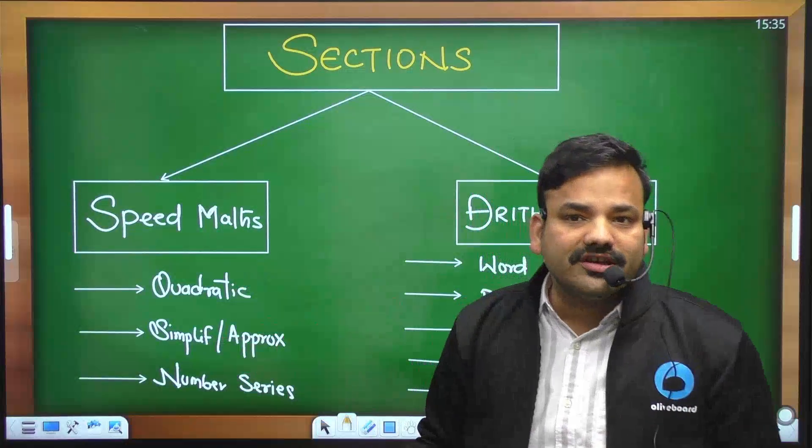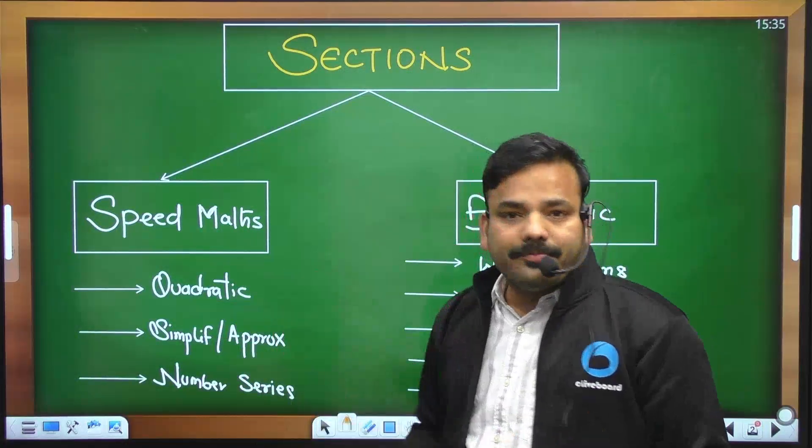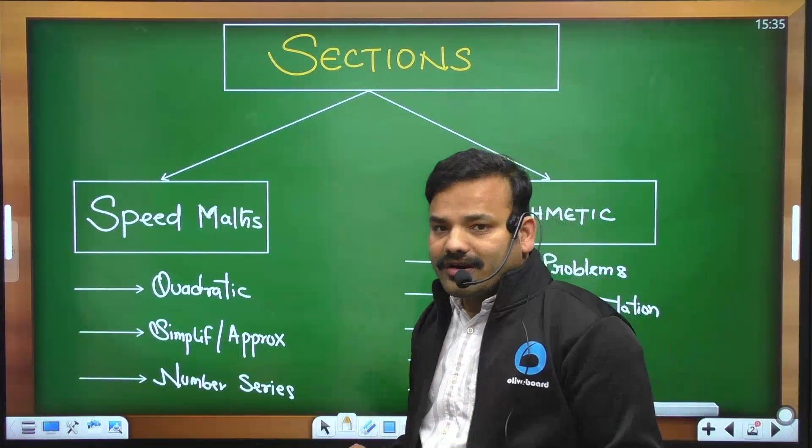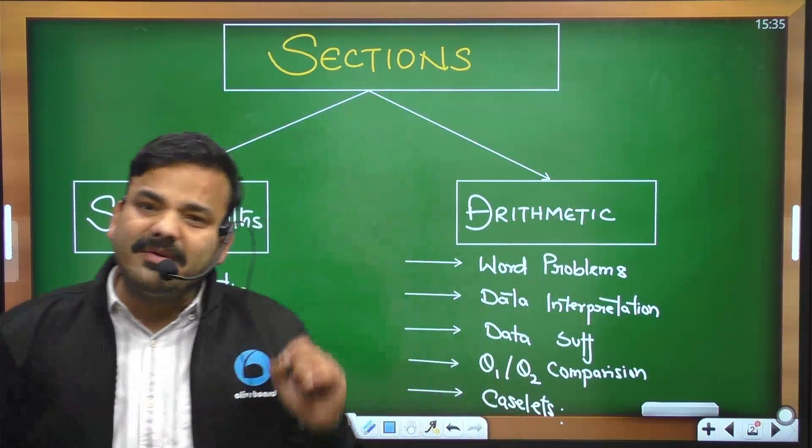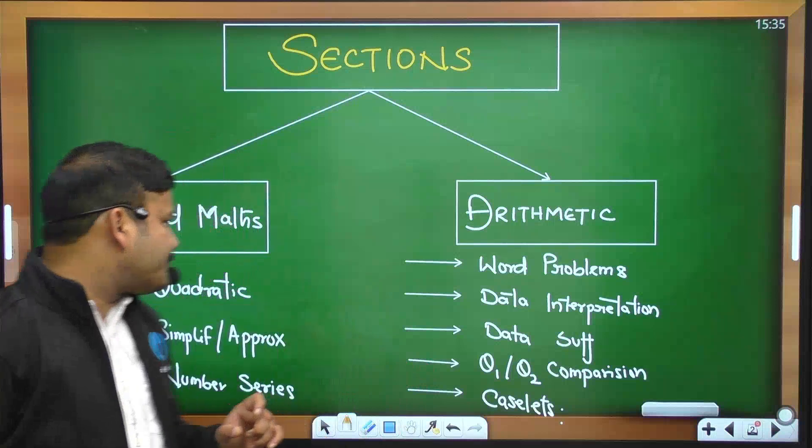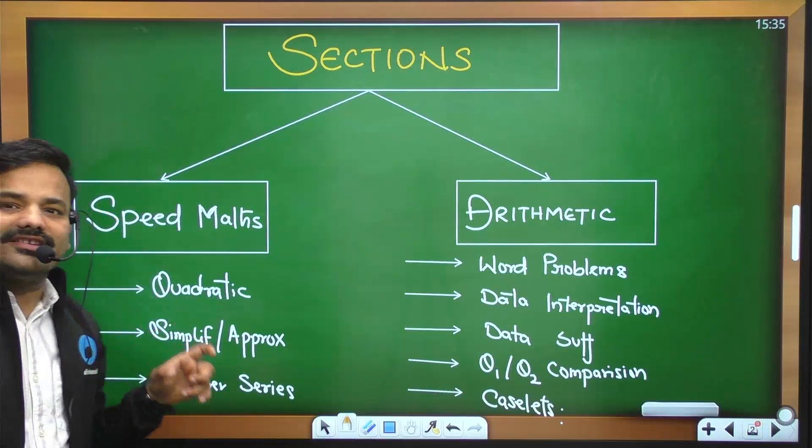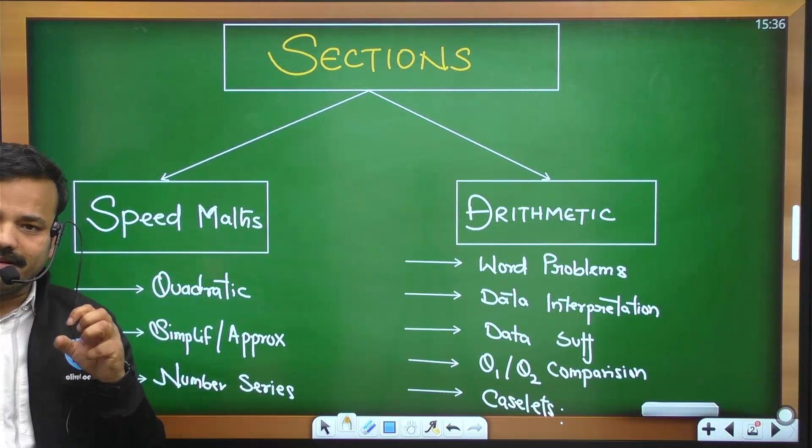But aisa hota hai ki simplification ke questions zyada pooch liya, ya phir kabhi quadratic ke kam pooch liya. Is tarike se kuch bhi jumble out hokar sakta hai. Toh kisi bhi paper mein jo sabse pehle attempt karna chahiye aapko, speed maths wala section karna chahiye kyunki isme se ek thora marks mil jata hai.